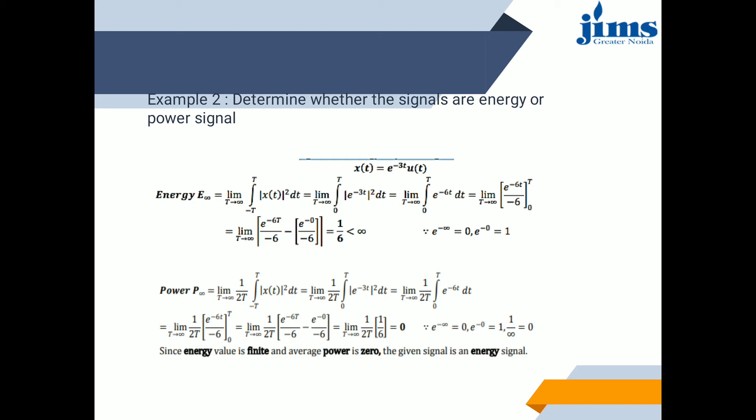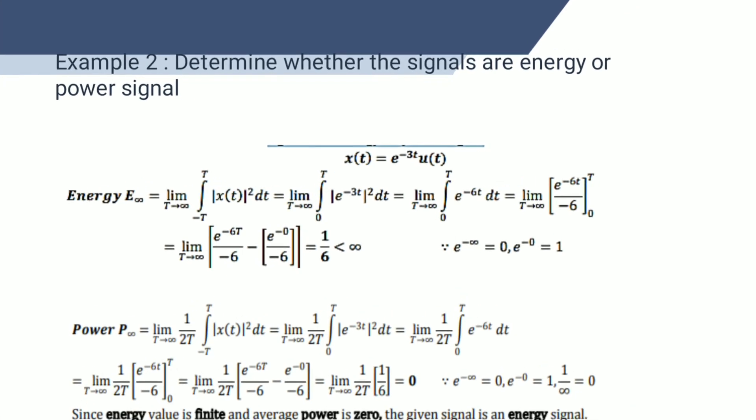The total normalized energy of a continuous time signal x(t) is given by E = limit as T→∞ of the integral from -T to T of |x(t)|² dt. The average normalized power of a continuous time signal x(t) is given by P. The square root of P is known as the RMS value of signal x(t).